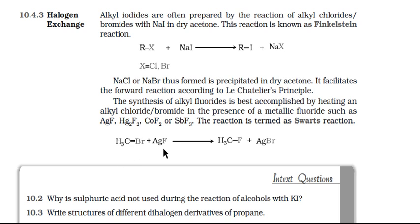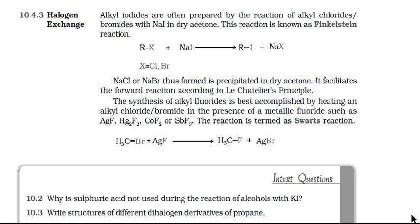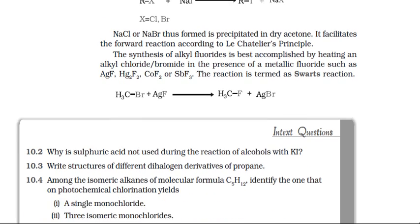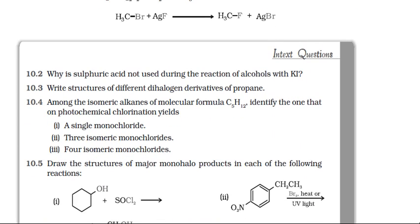The other reaction for preparation of alkyl fluoride is the Swarts reaction. If any alkyl chloride or bromide is allowed to react with a metallic fluoride such as silver fluoride, mercurous fluoride, cobalt fluoride, or antimony fluoride, a halogen exchange takes place and fluorine substitutes the chlorine or bromine, giving alkyl fluoride as the main product along with the corresponding metallic bromide or chloride as a byproduct.